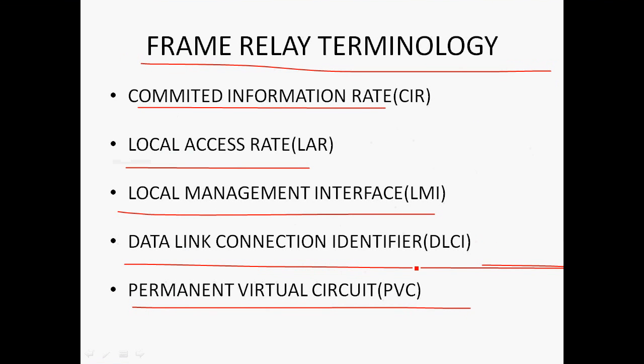Data Link Connection Identifier (DLCI): in a Local Area Network we use MAC addresses to send packets from source to destination. But in Frame Relay we use Serial Interfaces, which cannot generate MAC addresses. So we use DLCI to send packets from source to destination. The DLCI range is 16 to 1007.